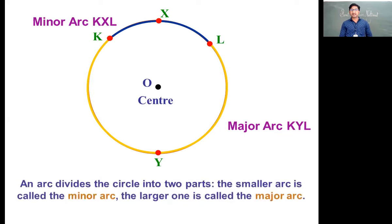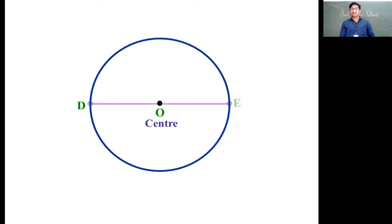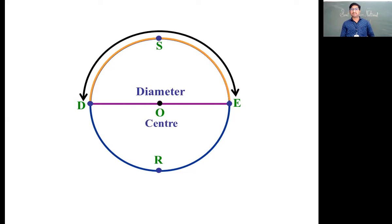Moving forward, let us see the different part, last part of circle - that is semicircle. The diameter from one point to other point passes through center, and the diameter divides the circle into two equal parts.